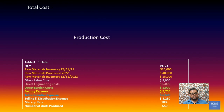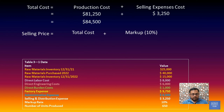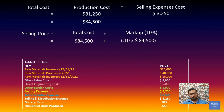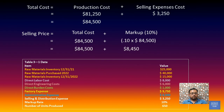Now we will calculate the selling price, which equals total cost plus profit percentage. In this question, a 10% profit is required. So we take total cost of $84,500 plus 10% profit of $8,450, giving a selling price of $92,950.